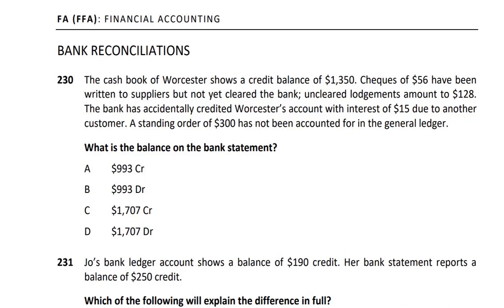Let's go to the question, 2-3-3. The cash book of Worcester store has a credit balance of 1350, and 6 cheques have been sent to suppliers but not yet credited by the bank. Uncleared lodgement amount is 128. The bank had accidentally credited Worcester's account with interest due to another customer. A standing order of $300 has not been accounted for in the general ledger.